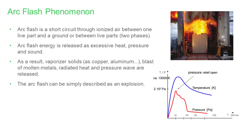Thank you, everyone, for joining this presentation. Today we will focus on arc flash protection — how we apply it and what we call the arc flash. At the beginning, let's look at some basics. The arc flash is a short circuit through ionized gas; it could happen between phase-to-ground or phase-to-phase. There is extensive energy released during the arc flash: high pressure, heat, and sound waves. There will also be vaporized solid material like copper or aluminum, globs of molten metal, and radiant heat. Because of the nature of this phenomenon, we can categorize it as an electrical explosion.